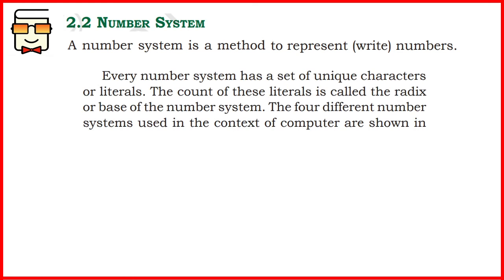So how are these different number systems actually different from each other? Different number systems differ from each other depending upon how many unique characters they use to represent numbers, and these unique characters are mainly known as literals. If a number system uses 10 literals — just like the decimal number system — then we say that this number system has a base of 10 or a radix of 10.